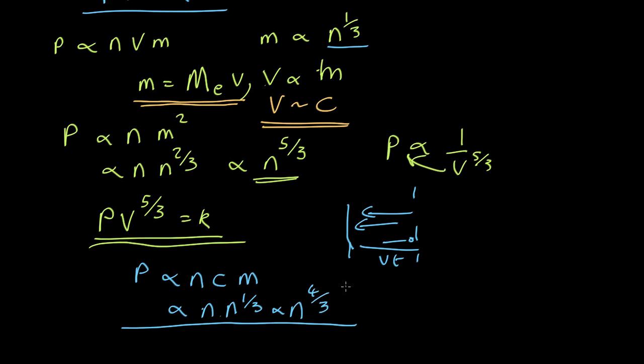This is right on the edge of stability, which means it's unstable. That's telling us that when you get close to the speed of light, white dwarfs are no longer stable, and they can then collapse quite happily.